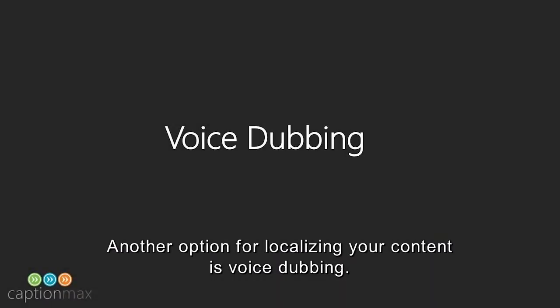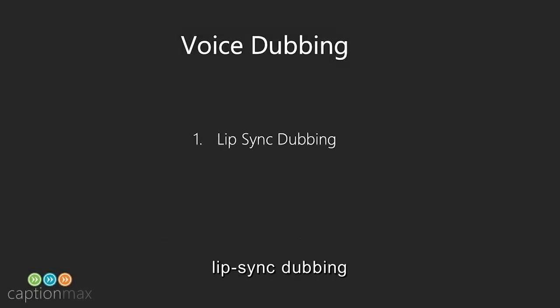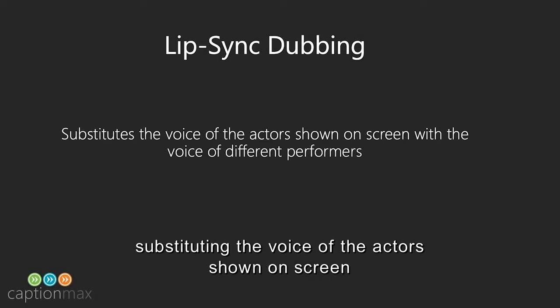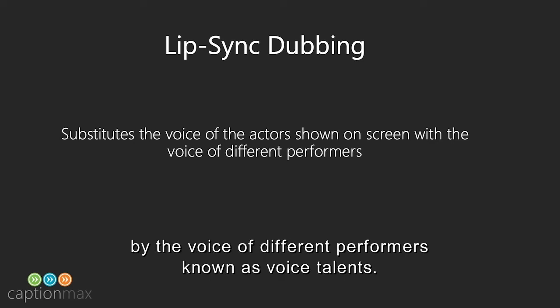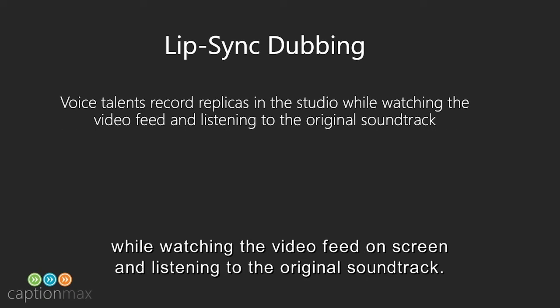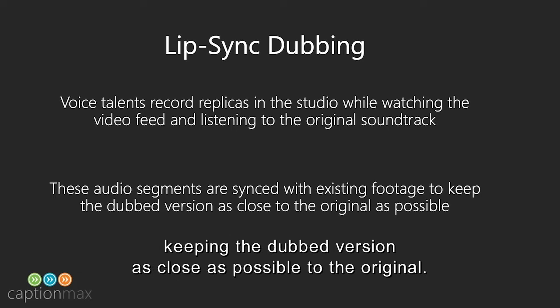Another option for localizing your content is voice dubbing. There are two different kinds of dubbing to choose from: lip sync dubbing and UN style dubbing. Lip sync dubbing consists of substituting the voice of the actors shown on screen by the voice of different performers, known as voice talents. Professional actors record replicas in the studio while watching the video feed on screen and listening to the original soundtrack. The new audio segments are then synced with the existing footage, keeping the dub version as close as possible to the original.